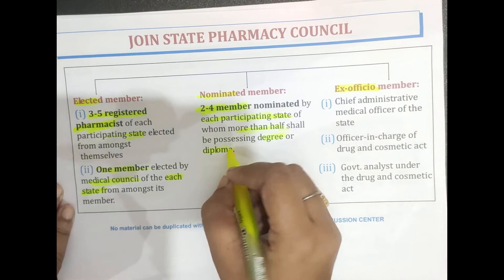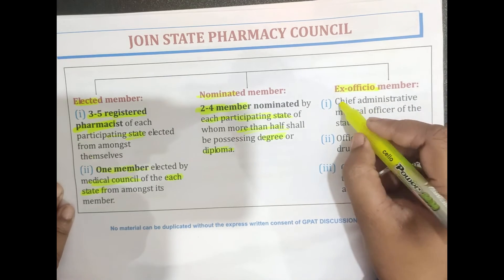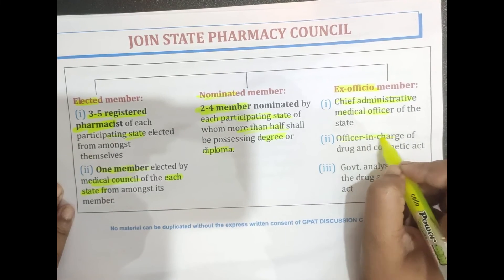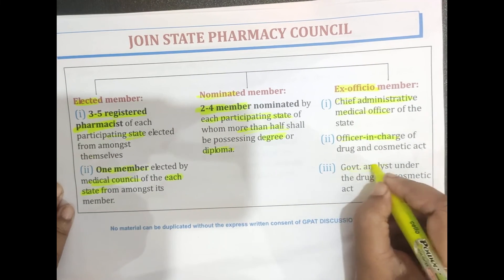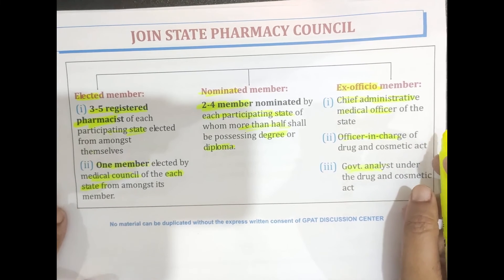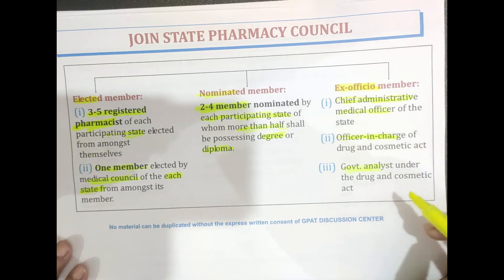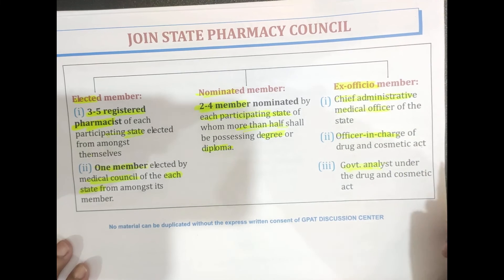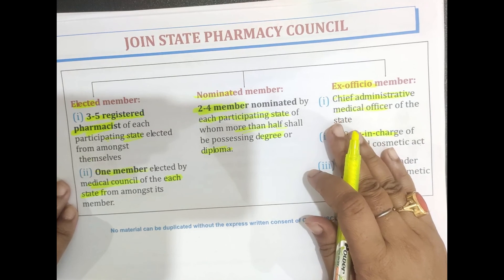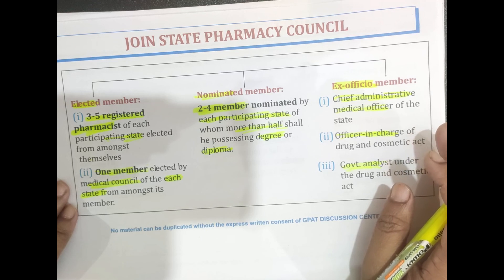The ex officio members of the Joint State Pharmacy Council are: the Chief Administrative Medical Officer of the state, the Officer in Charge of the Drug and Cosmetic Act, and the Government Analyst under the Drug and Cosmetic Act. This concludes the discussion on the constitution of the State Pharmacy Council and Joint State Pharmacy Council. Thank you for watching.